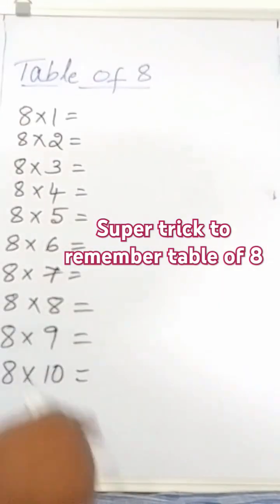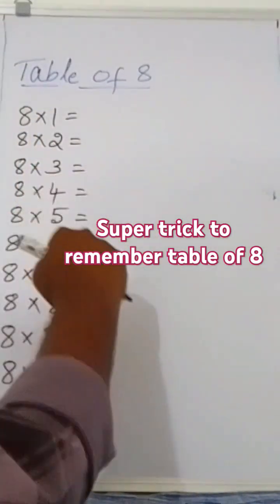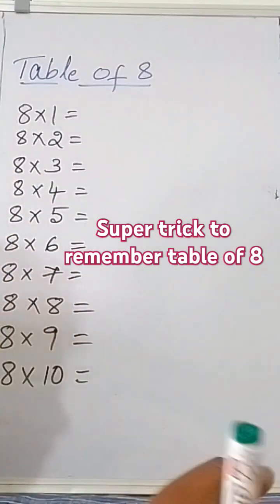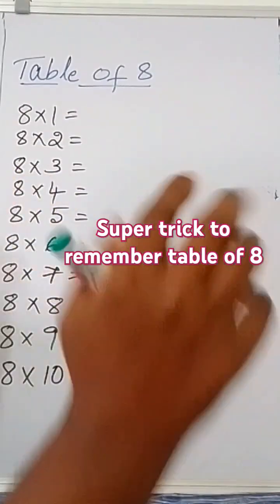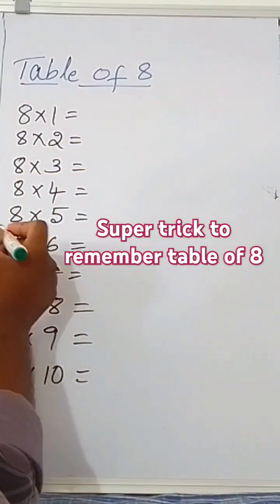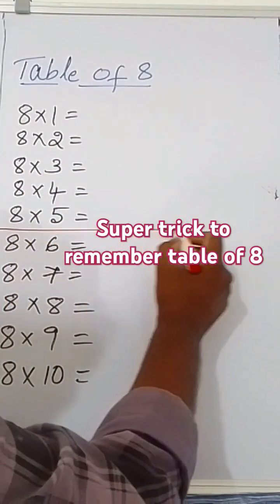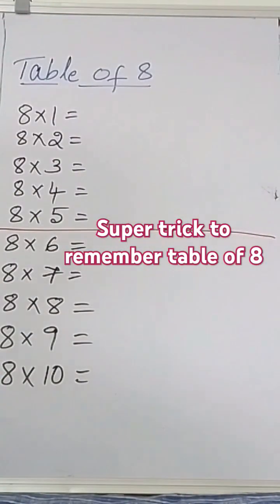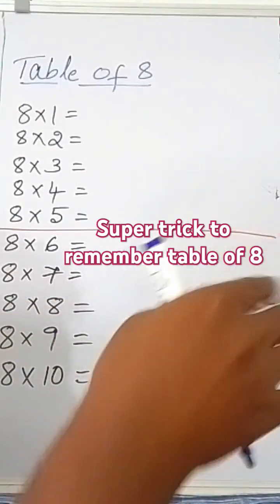Here's an easy trick to remember the table of 8. First, there are 10 rows — 1, 2, 3, 4, 5, 6, 7, 8, 9, 10. Divide this into two equal halves: this is the first half, this is the second half. The whole numbers start from 0.